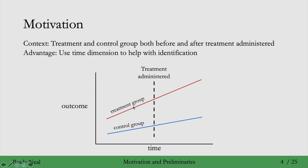Unlike the treatment group, who will not get the treatment until a specific point in time. They're going to be just like the control group in that they won't have the treatment up until this point, and then after that they will have the treatment. So the treatment is administered at a specific point in time to the treatment group, not to the control group. The fact that we have this time dimension is going to be helpful — we're going to use the fact that we observe these groups over time to help us with identification.